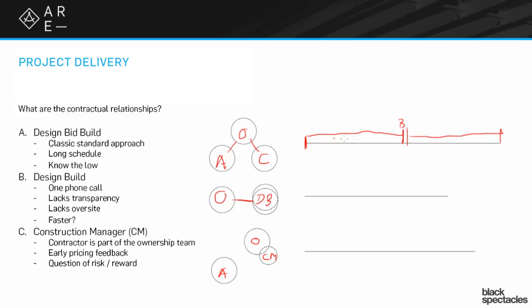One of the key advantages of design-bid-build is that because you're bidding it out with a full set of drawings — having gone through the entire design process — by the time you get to the bidding moment, you have a pretty good set of drawings. The bids are apples-to-apples, and you can very clearly see which is the low bid and which is the high bid. You can see which ones seem to have extra information. The advantage is really that you know the low bid, you have much more information, but it takes a very long time.